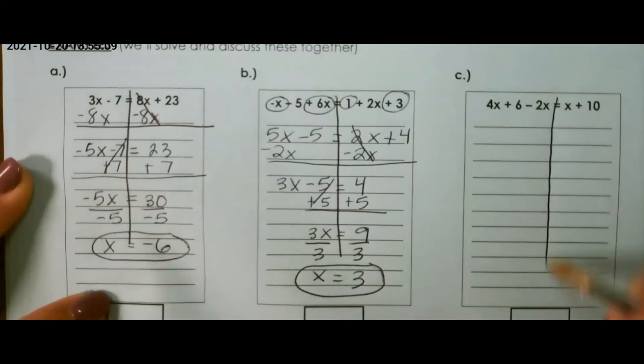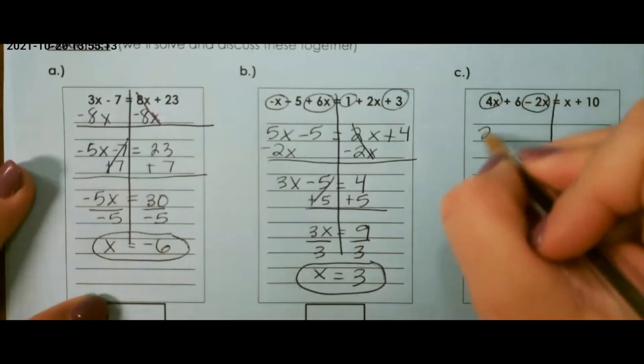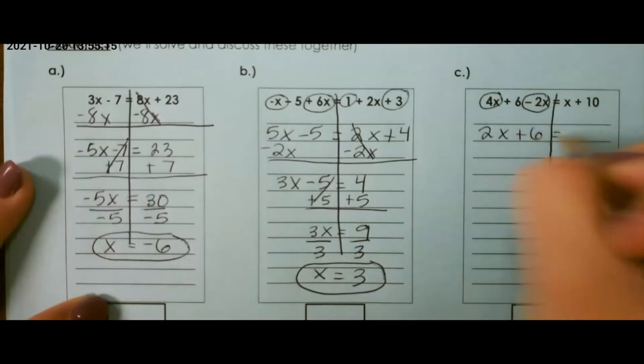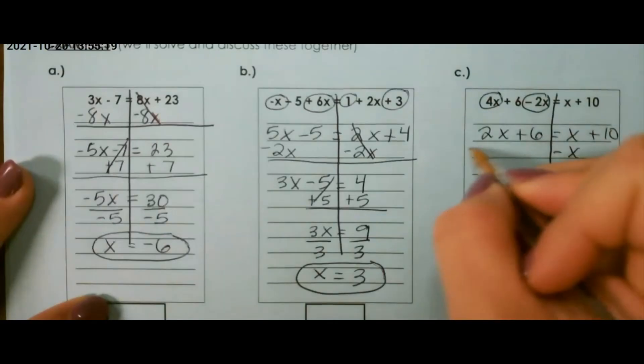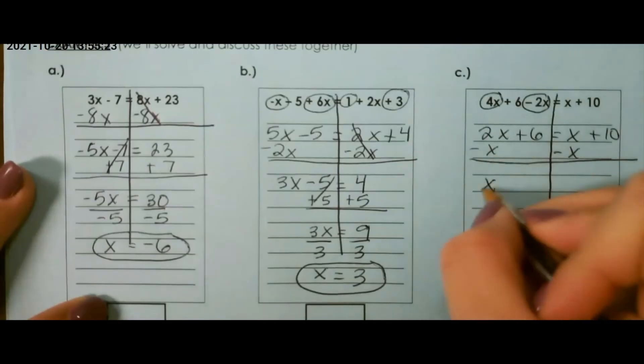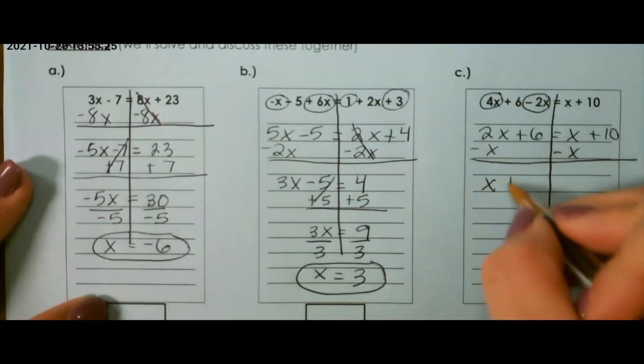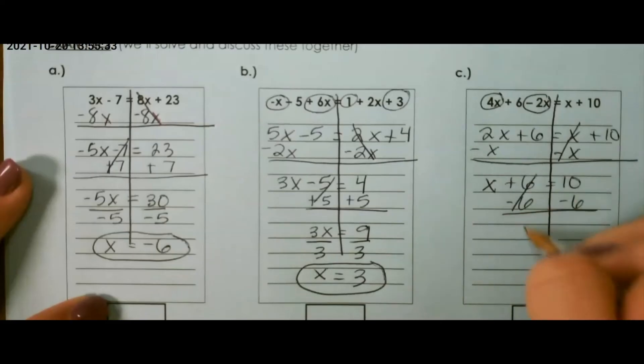For our last example, we can combine 4x and negative 2x on the left and nothing on the right. I want to take x to the left-hand side. So, 2x minus x is just going to give me x. So, x plus 6 equals 10. I'm going to subtract 6 from both sides, and that will leave me with x equals 4.